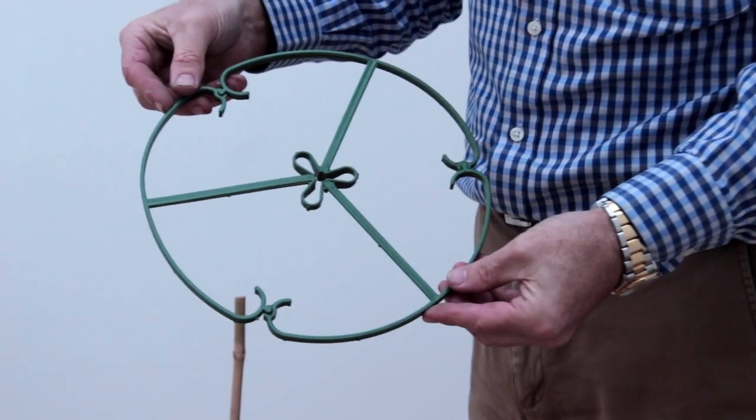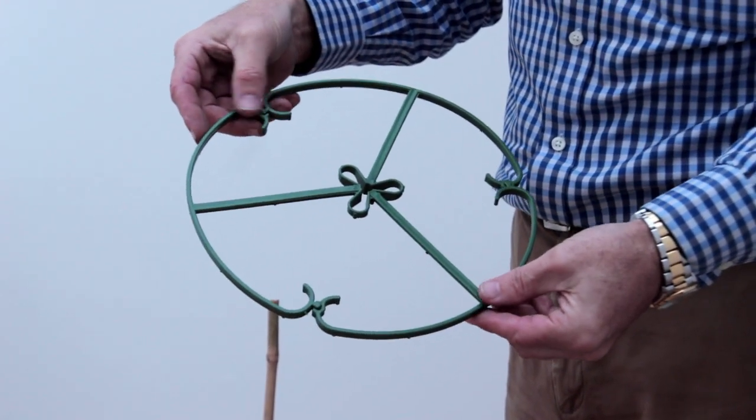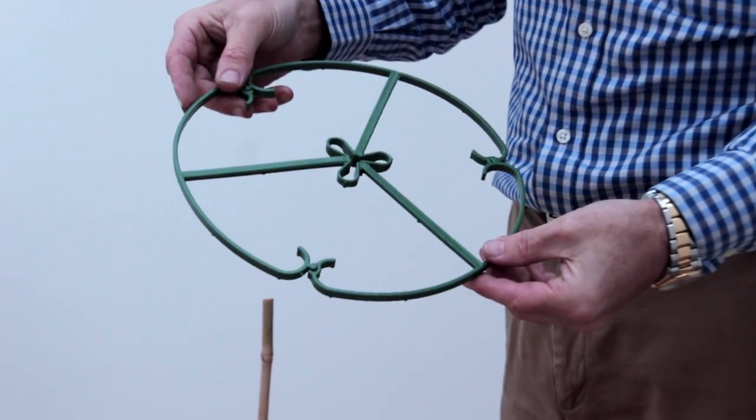This is our circular plant support PS10 and PS12. They're 10 inch and 12 inch diameter.